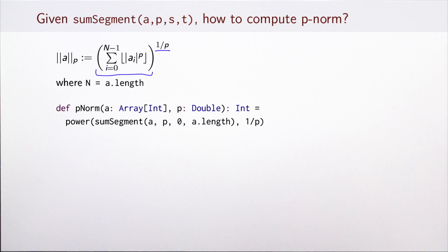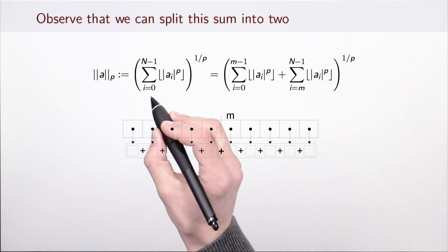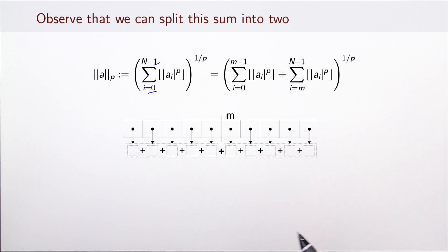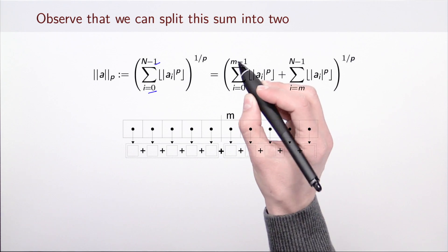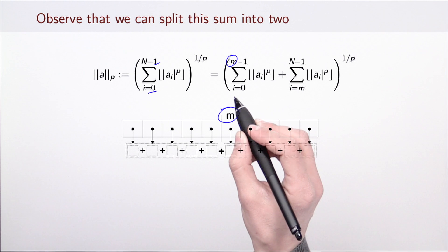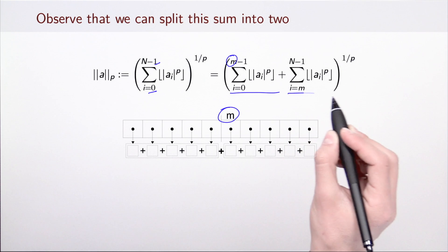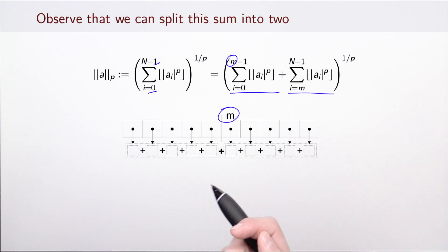How would we go about arriving at a parallel version? First, observe that we can write this big sum from 0 to n-1 in two parts. Let's pick some element m in the middle of the array, and then first sum up the powers of elements up to m, and then the elements starting from m. This is, of course, equivalent to our original expression.